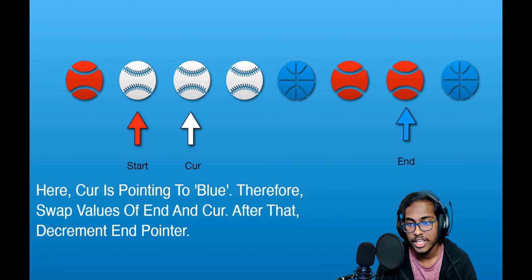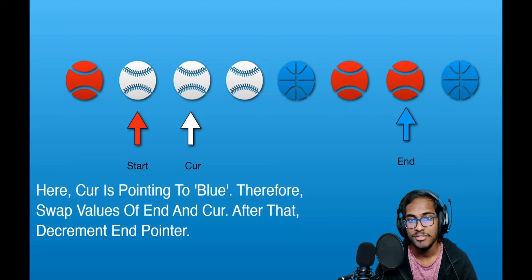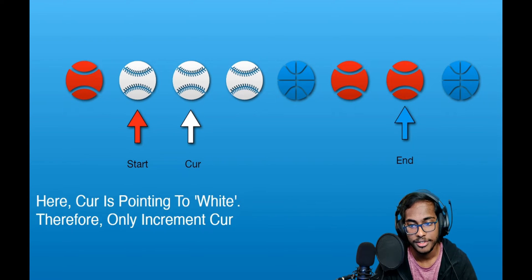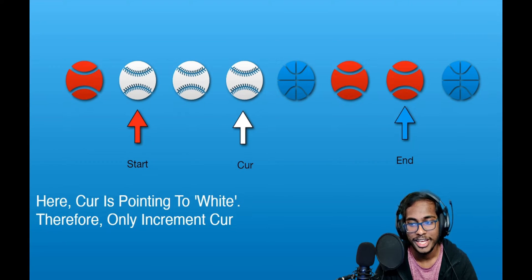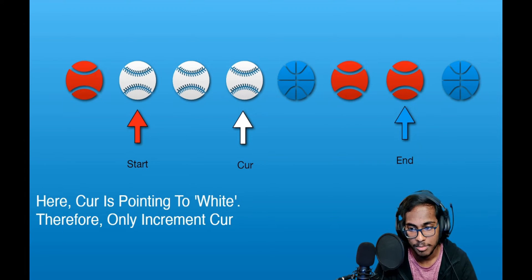In the next step, cut is pointing to a white ball again. When it points to white, we simply increment cut — there is no swapping. We increment cut again, and now it's pointing to another white ball. Again, we do nothing and simply increment the cut pointer.